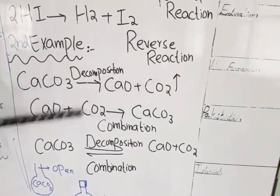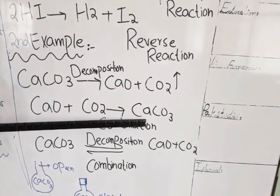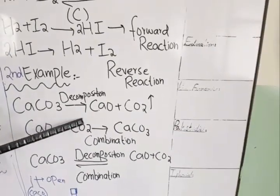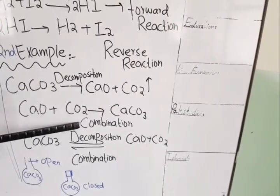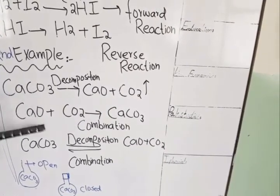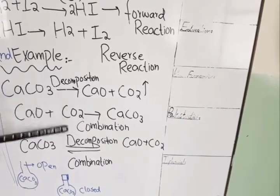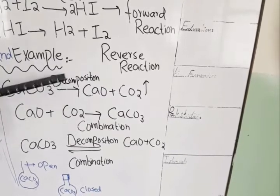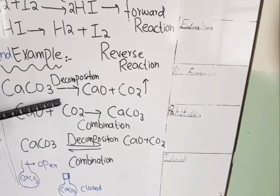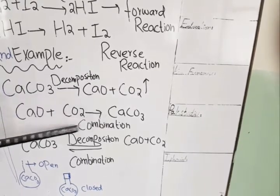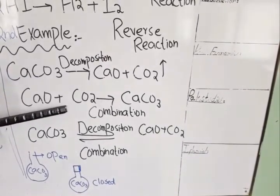When product formation occurs, we can provide the conditions again and we will have calcium carbonate again. Initially, the rate of decomposition will be very fast, and the rate of combination will be very slow and negligible. Over time, the rate of decomposition and combination will reach an equilibrium state. At equilibrium, there will be product formation, and after that we will get the desired product, and then the equilibrium state will be maintained.